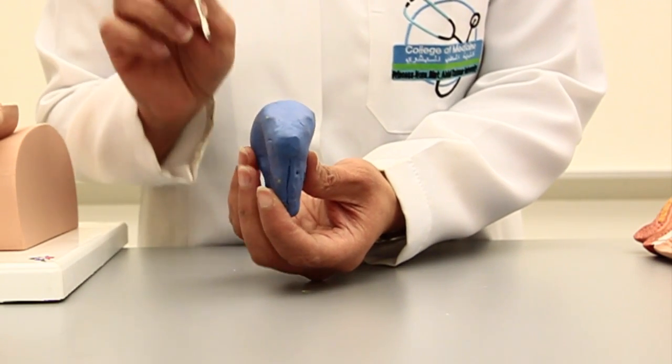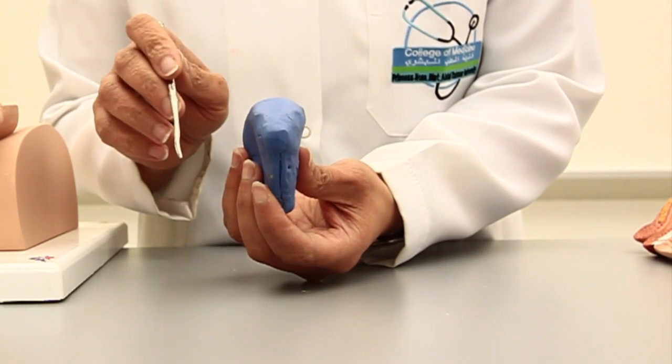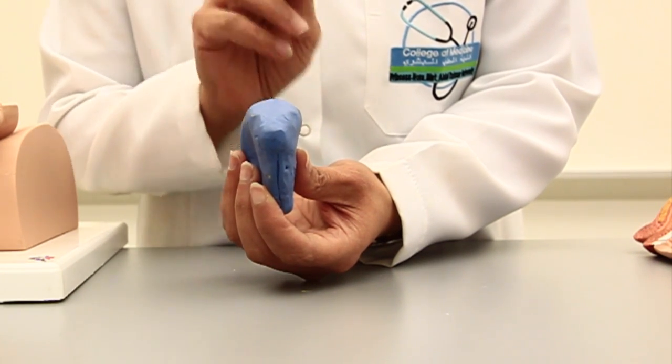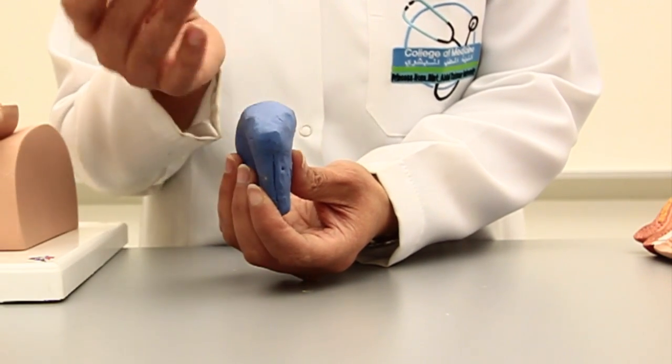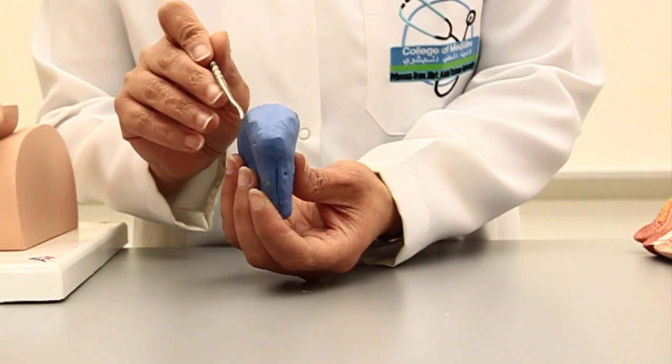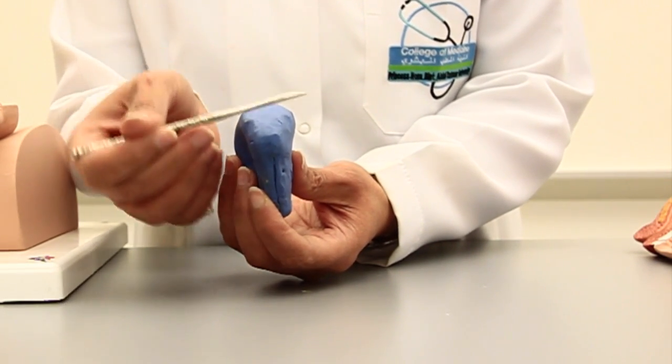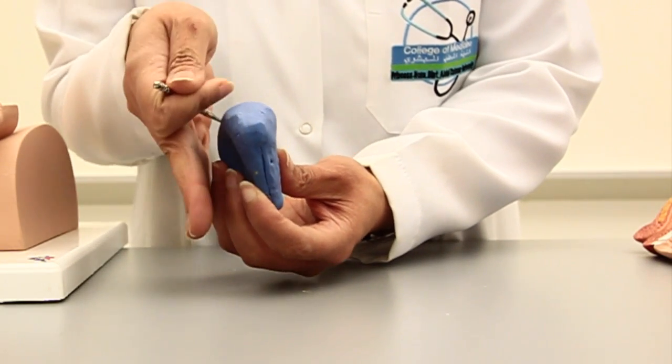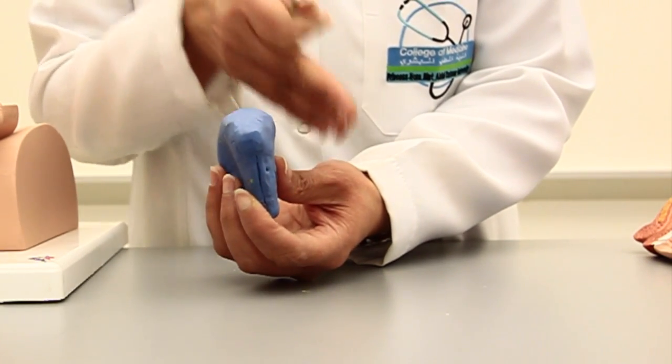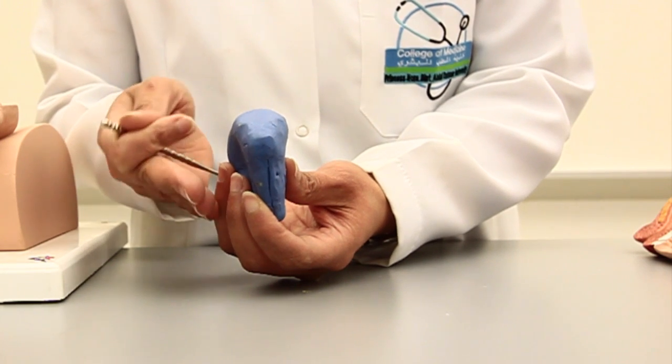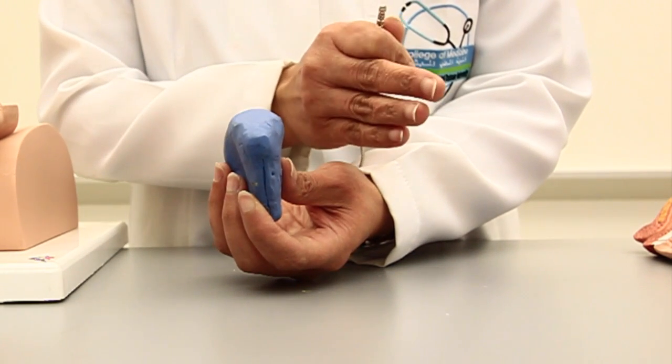Then there are a right and a left, or left and right according to your view, inferolateral surfaces. Because this was the superior surface, and running down from this surface on either side are the inferolateral surfaces, a right inferolateral and a left inferolateral.